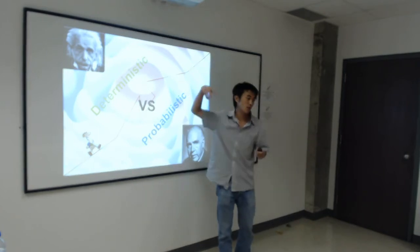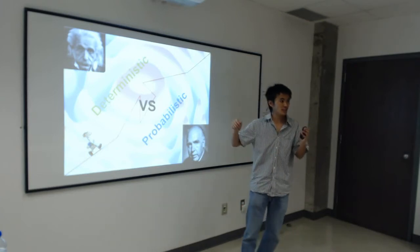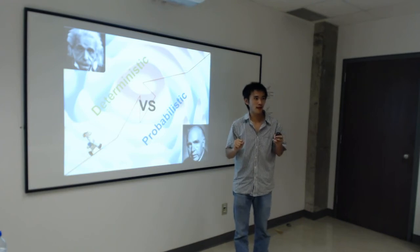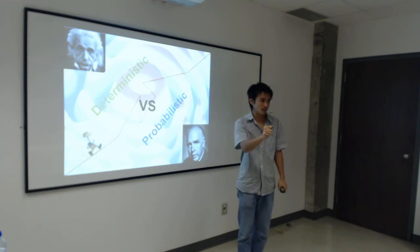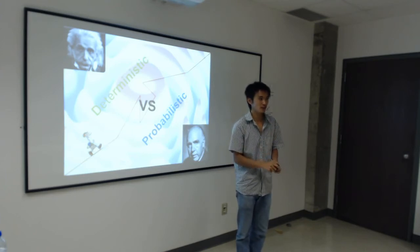Einstein had some possible explanations. He involved some hidden variables. But recent experiments have disproven Einstein. So it really seems that our universe at its lower scales is probabilistic, random. Or so most physicists would say.